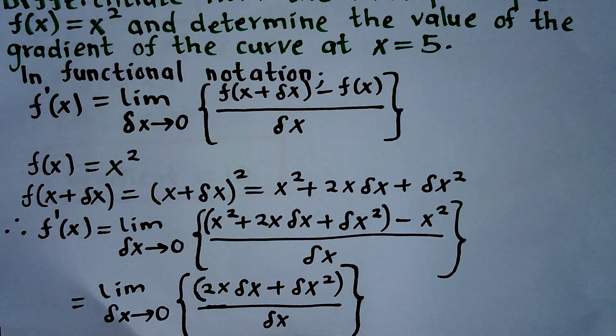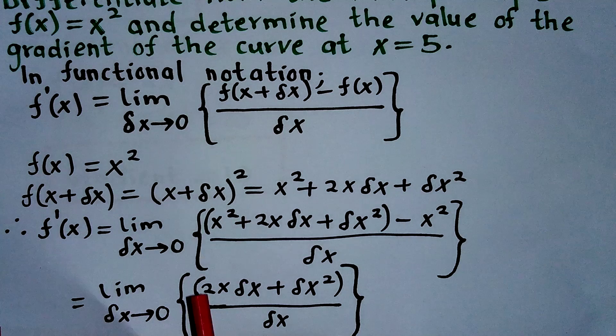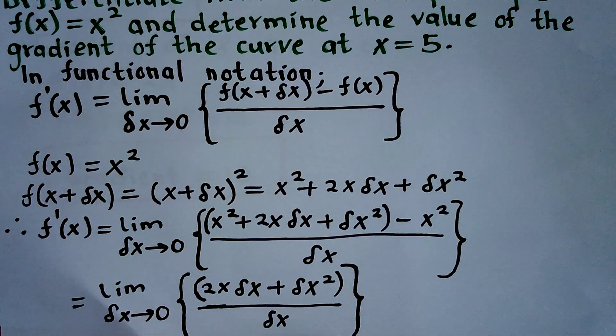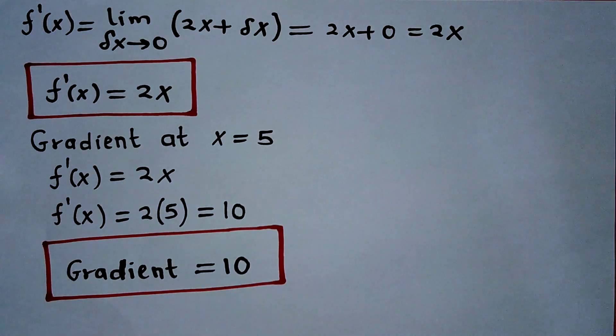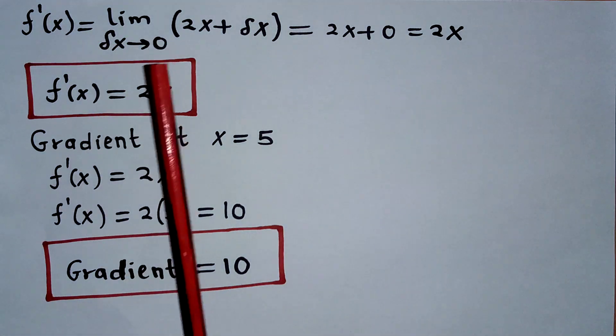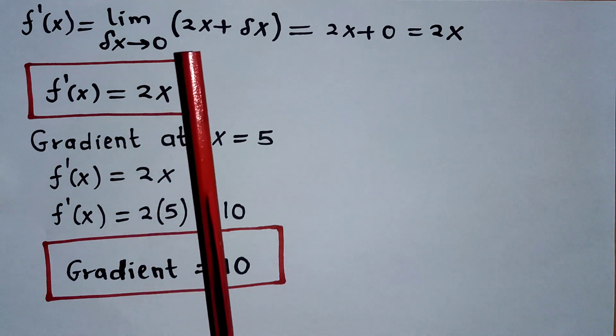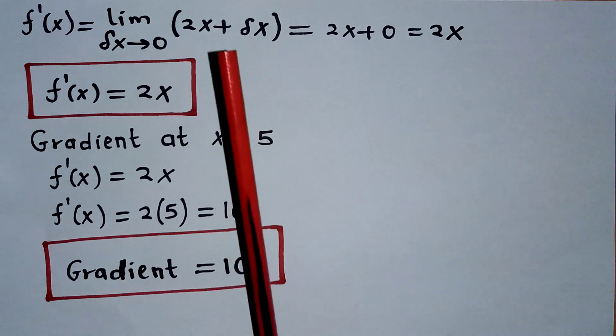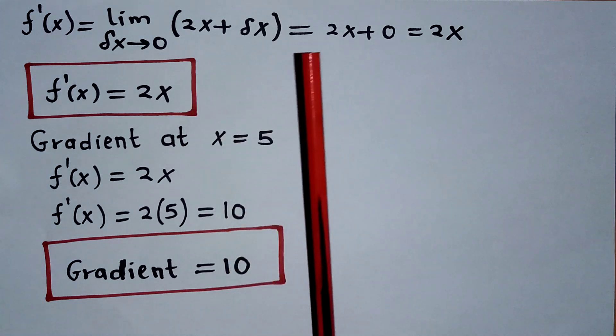After that, you're going to realize that δx is common here. So that means if I factor out δx, it's going to cancel with the one in the denominator. And so I'm going to have f'(x) as the limit when δx is tending to 0 of 2x + δx.